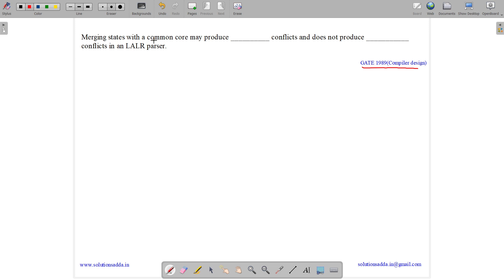What is the meaning of common core? Common core basically means the LR0 items in the parser. You need to remember that common core refers to the LR0 item. And what do we know about LR0 items? LR0 items do not have lookahead symbols.